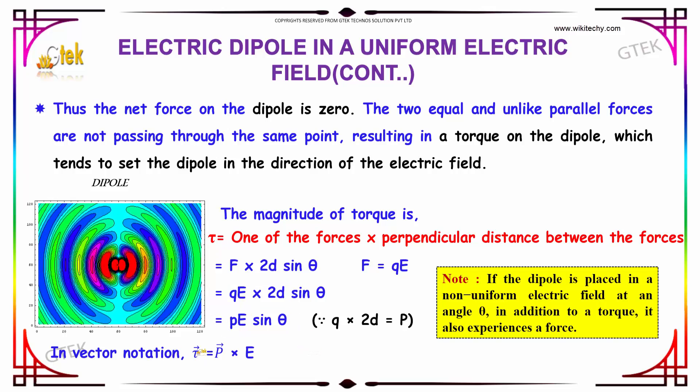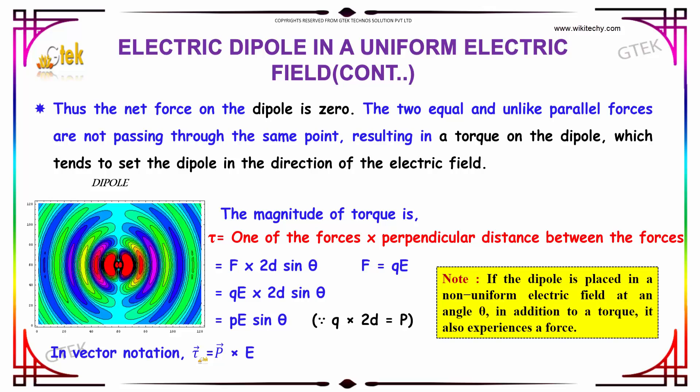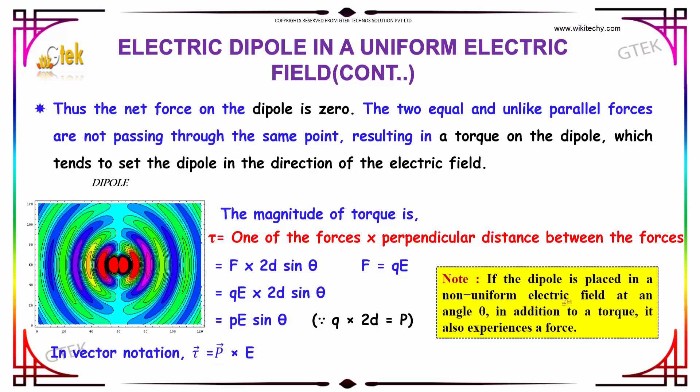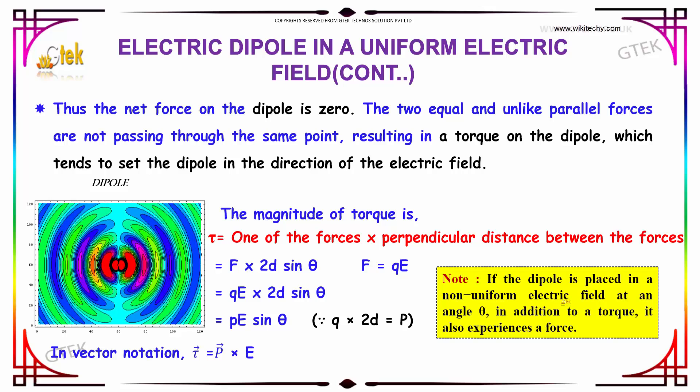In terms of vector notation, the magnitude of torque in vector notation is tau vector equals P vector cross E vector.